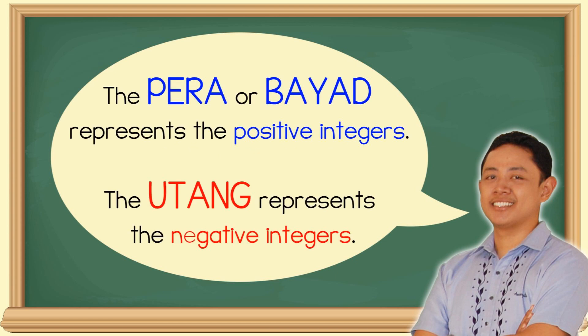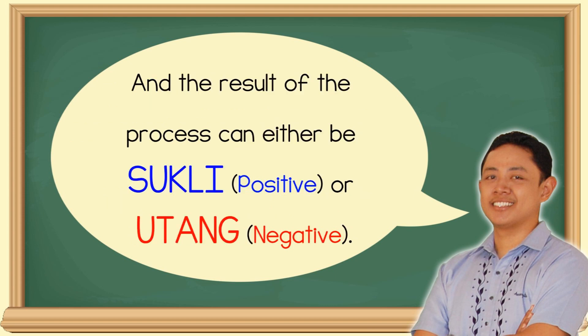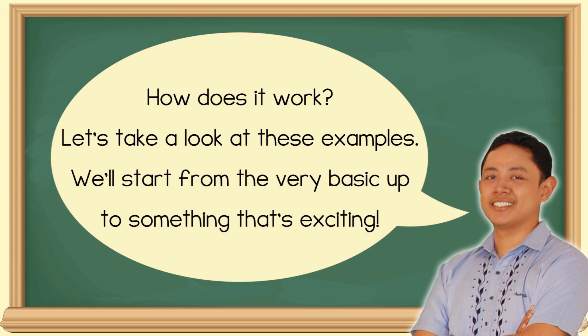The pera or bayad represents the positive integers. The utang represents the negative integers. And the result of the process can either be sukli, which means positive, or utang, which means negative. How does it work?